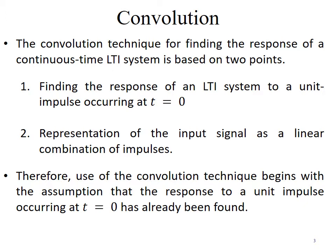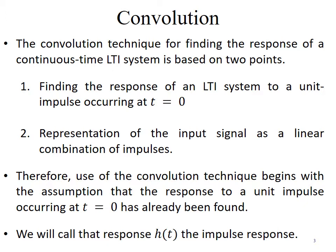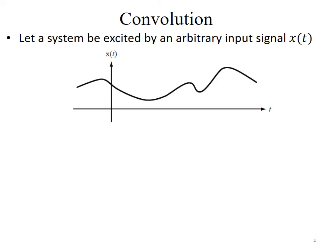The convolution technique begins with the assumption that the response to a unit impulse at t equal to zero has already been found. We will assume the impulse response of the system is known and represent it by h(t). The second requirement is to represent the input signal as a linear combination of impulses.